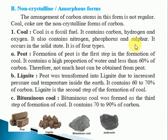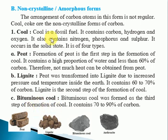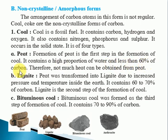Coal occurs in the solid state. According to the percentage of carbon, coal is classified into four types: peat, lignite, bituminous, and anthracite. The formation of peat is the first step in the formation of coal. It contains a high proportion of water and less than 60% of carbon.